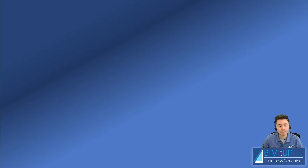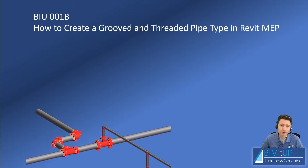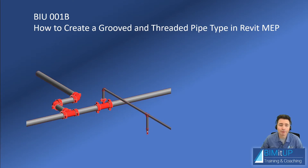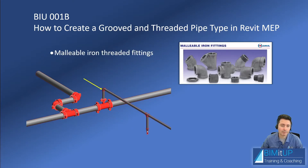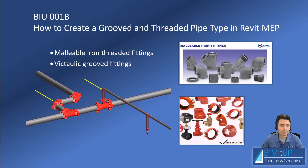Hi everyone, Alex with Beam It Up here again. Today I'm going to be showing you how to create a combined grouped and threaded pipe type in Revit MEP. For that we're going to be using malleable iron threaded fittings for our small piping runs and we're going to be using Victaulic grooved fittings for our large pipe runs.